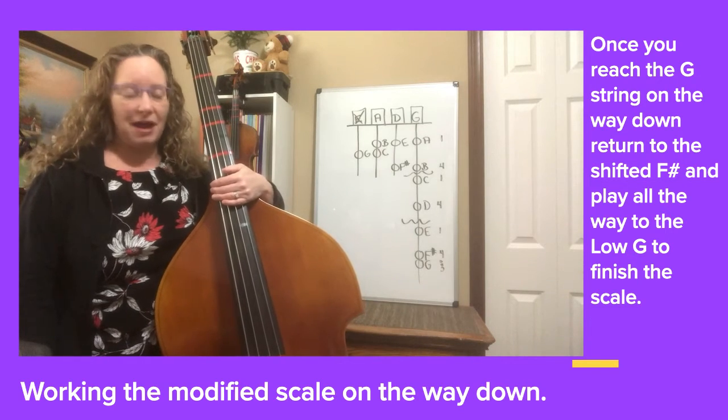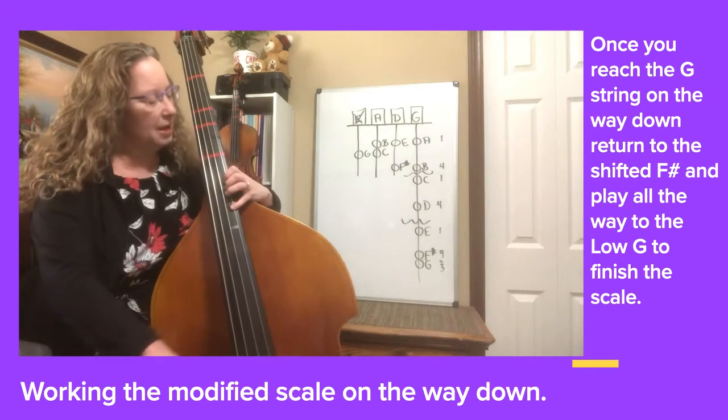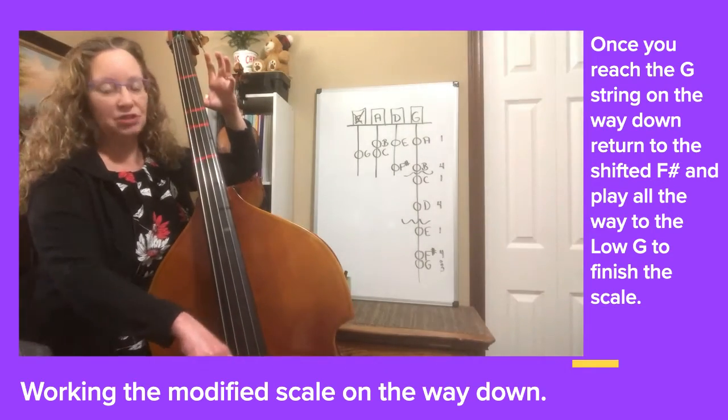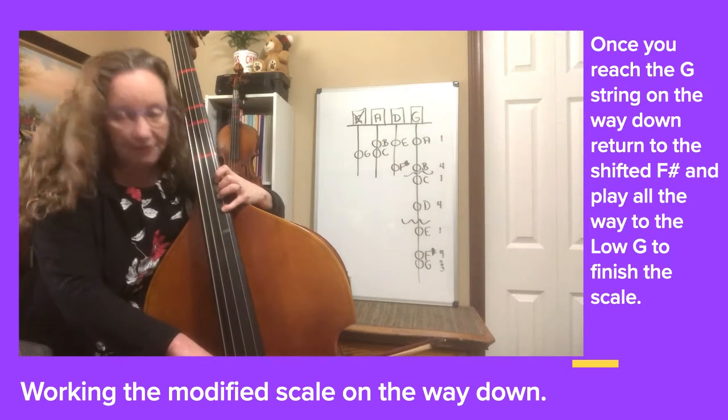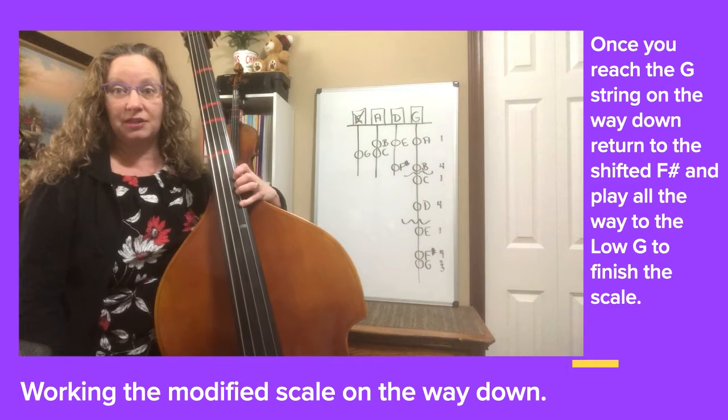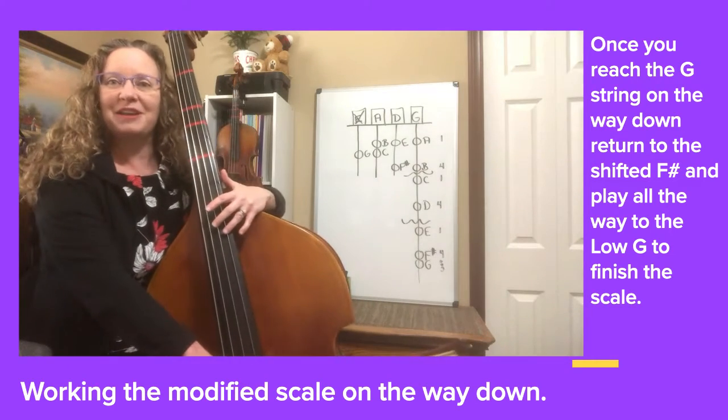Now let's practice going backwards. The trickiest part is after you're playing on the way down, while you're playing open G, is finding the F sharp note again. So that will be our trickiest portion of this. So here we are going backwards, starting on harmonic.